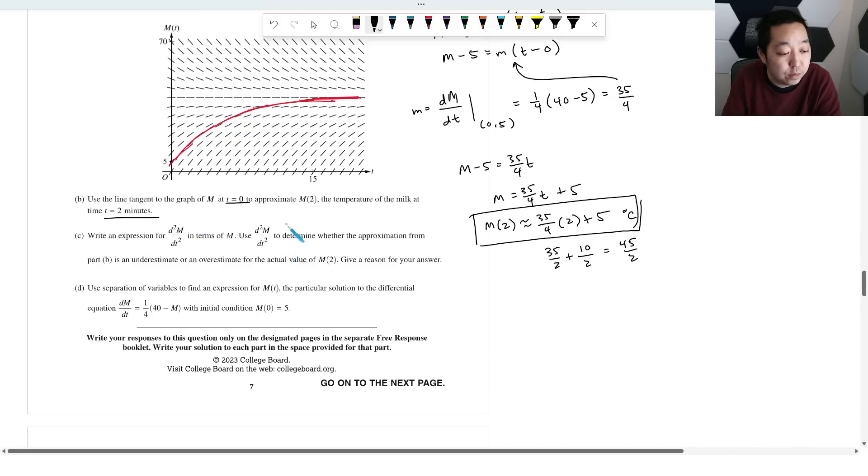Write an expression for the second derivative and use to determine whether it's an under or overestimate. All right. So if we look at the second derivative, so first of all, I should expect a negative or I should, well, I don't know, I guess we'll just compute it.